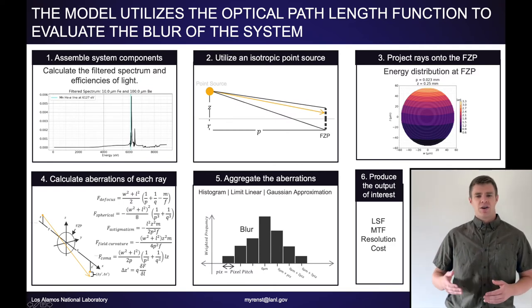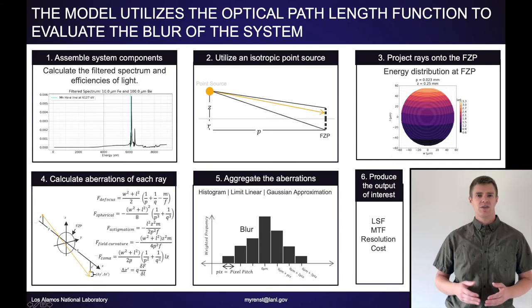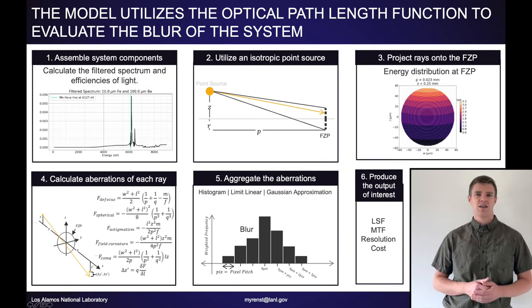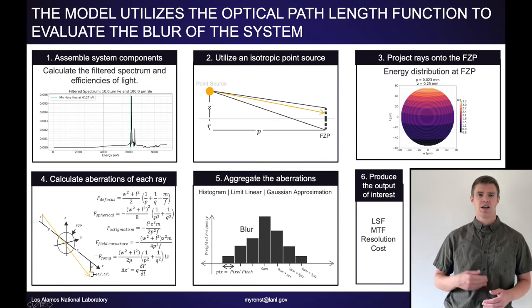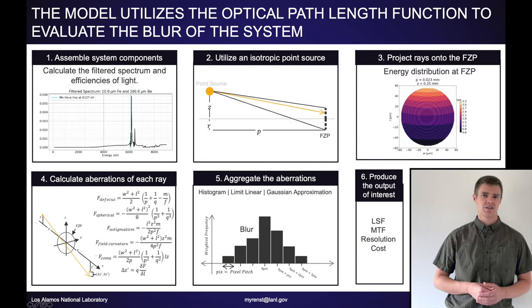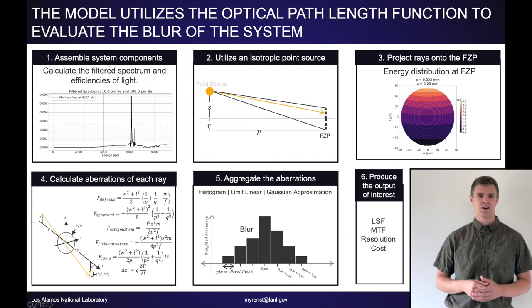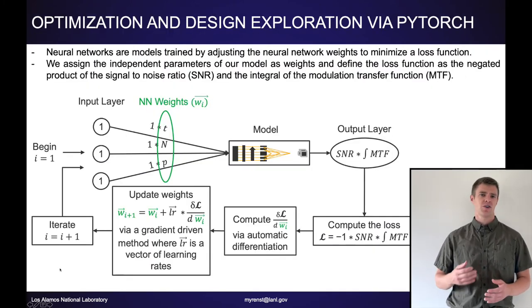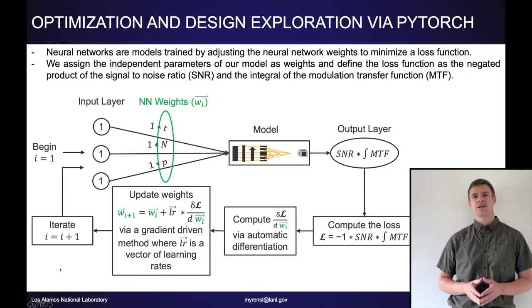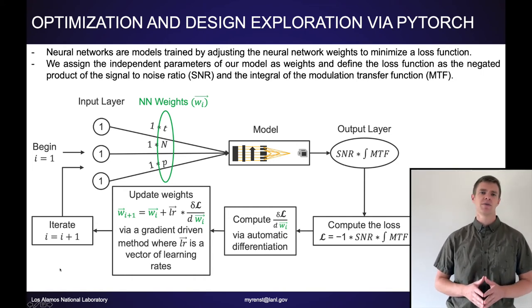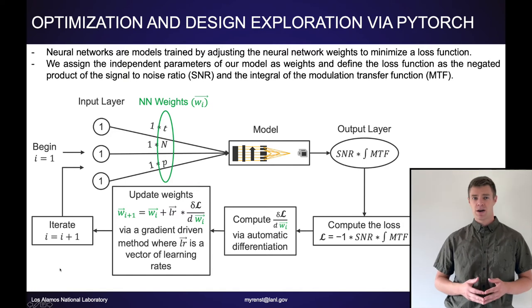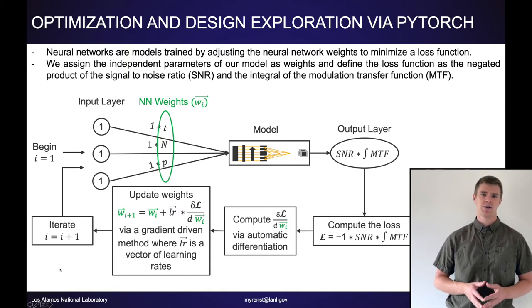There's more information in the appendix about these three different aggregation methods. Finally, from the aggregated blur, we go ahead and produce an output of interest, and one of these outputs could be a cost function. The cost function is a necessary component in any optimization scheme. We utilize PyTorch for its neural network package to exploit its optimizers. Essentially, we spoof a neural network.